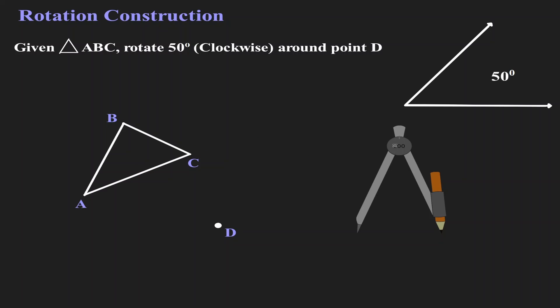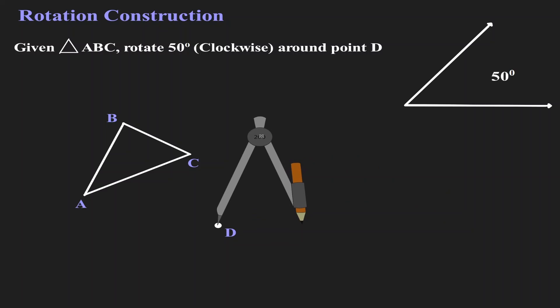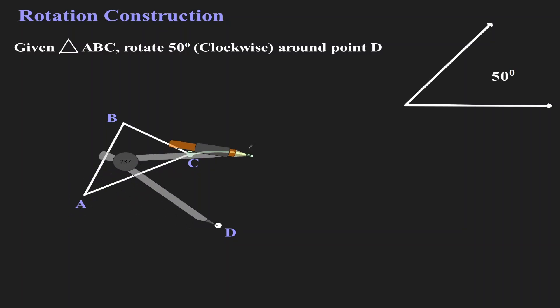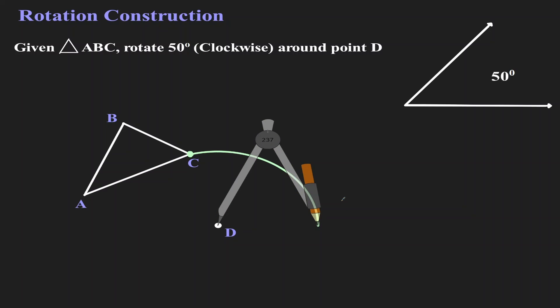Let's start by placing my metal leg at the central rotation, point D. And let's place our pencil on point C. Now let's create a mark towards the right-hand side, because this is the path that point C is going to be rotating about. Notice that the direction is clockwise, so that's why we made our mark going towards the right.